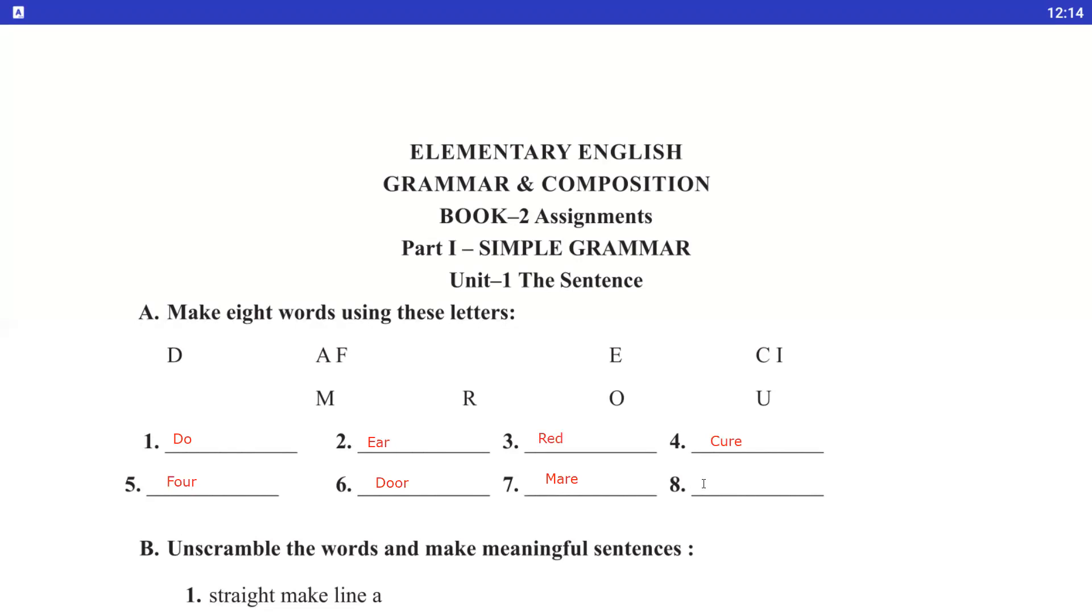You can use all your mind to make words. Let's see. First is do, meaning to do. Ear, it's a part of a body. Red, it's a color name. Cure, meaning to cure. Four, F-O-U-R. Door, D-O-O-R. Mare, M-A-R-E. And the last word is deer, D-E-A-R.